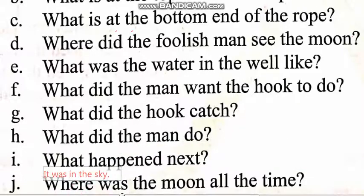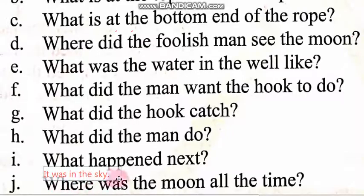Question number 10: Where was the moon all the time? Har waqt chaand kidhar hota hai? It was in the sky. Ye aasmaan par tha — yani moon aasmaan par tha.